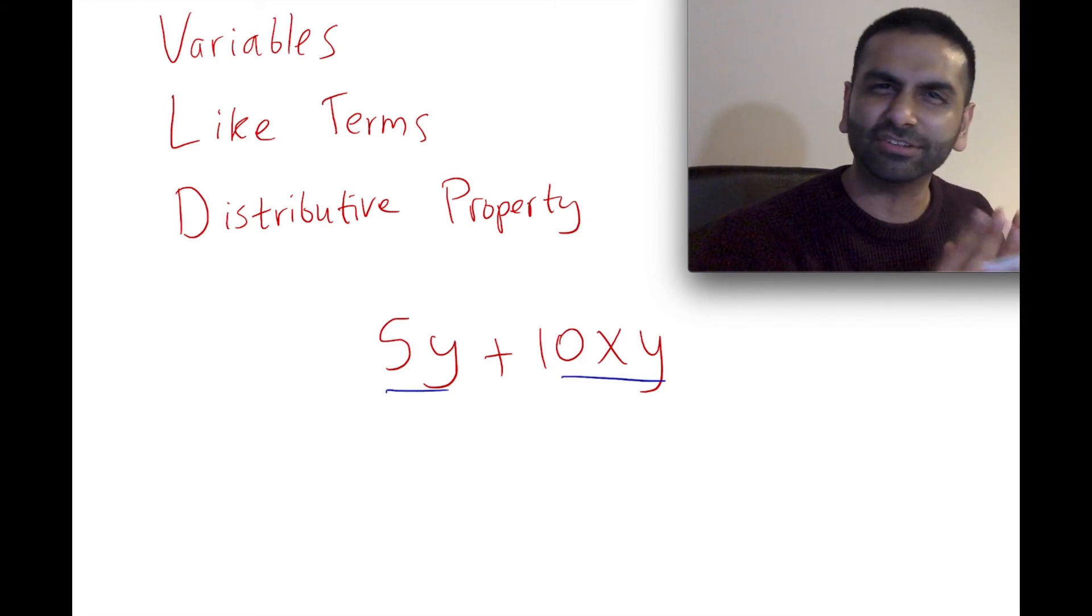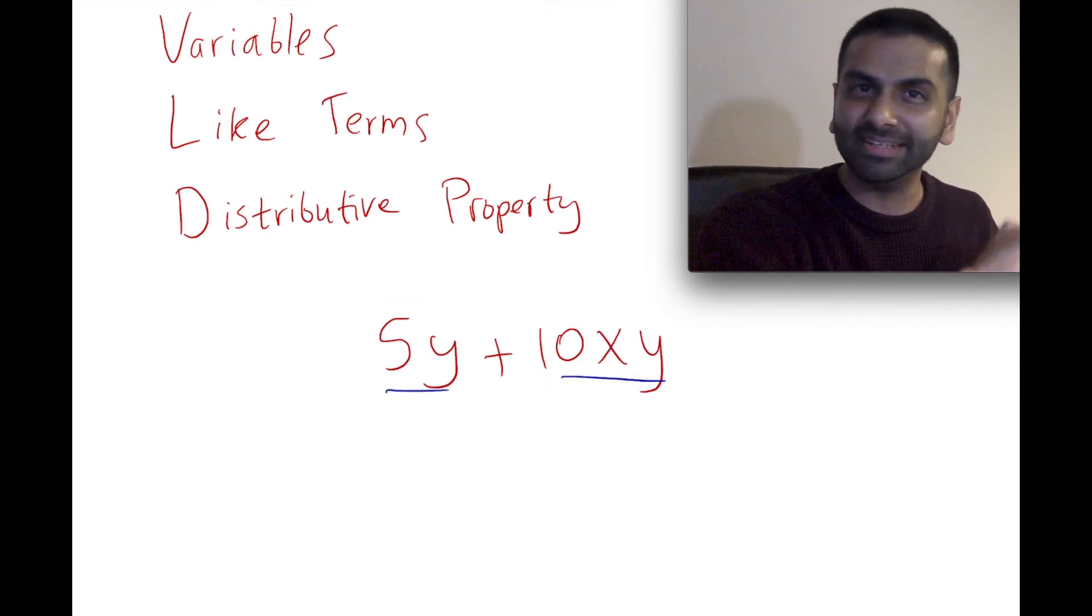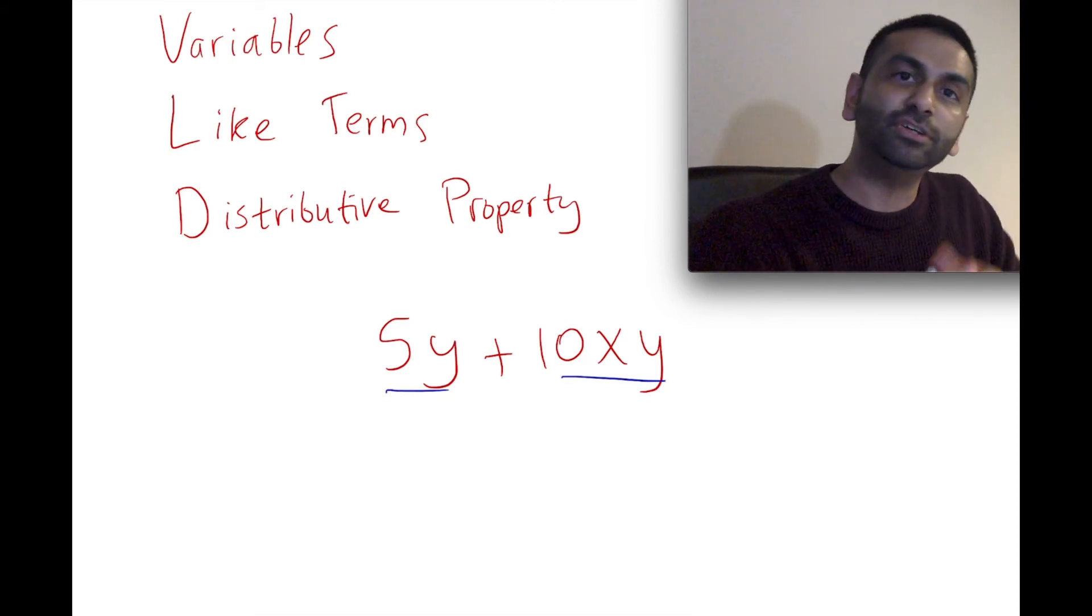Let's see how we would factor something like this. First, look at the coefficients. The coefficient here on this first term is 5 and on the second term is 10. Whenever you're factoring something like this, the opposite of the distributive property—with the distributive property you multiply, so to do the opposite you'd be dividing.